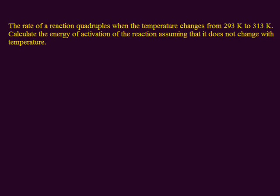The rate of a reaction quadruples. Consider the initial rate of reaction is K, and when it quadruples it becomes 4K. When the temperature changes from 293K to 313K,